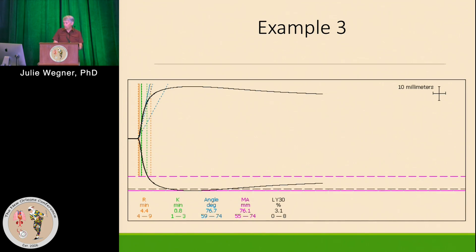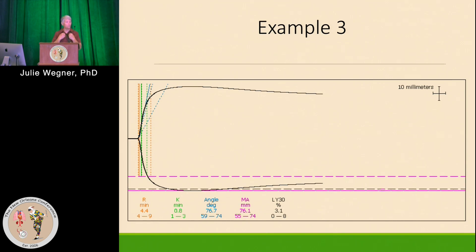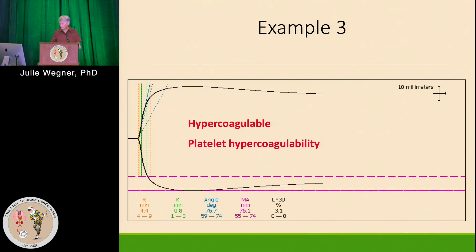Example three is a hypercoagulable case. Just looking at the pattern, you can see the MA is very high — in this case it's 76, above normal, suggesting hypercoagulability. The R value is within normal range; the K is low because in the hypercoagulable state thrombin is generated very quickly, activating the platelets, and the platelets are then increasing the strength of the clot. This is not typically seen in the OR in cardiac surgery patients post-op, but could be seen up in the ICU — most likely platelet hypercoagulability.